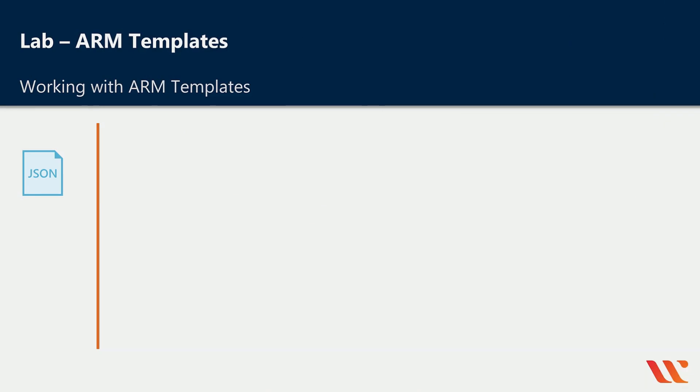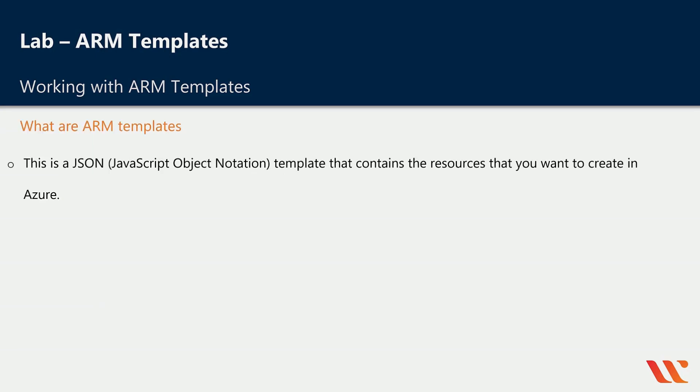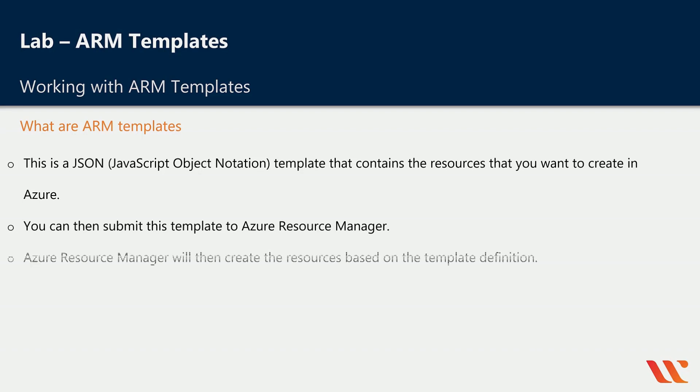Hi and welcome back. In this chapter we are going to be looking at ARM templates — that's Azure Resource Manager templates. An ARM template is a template written in JSON, JavaScript Object Notation. This template contains the resources that you want to create in Azure. Once you have the template in place, you can submit it to Azure Resource Manager, which will then create the resources based on the template definition. The entire idea of these templates is infrastructure as code that can be used to deploy your resources in Azure.